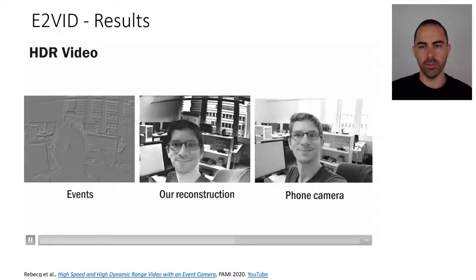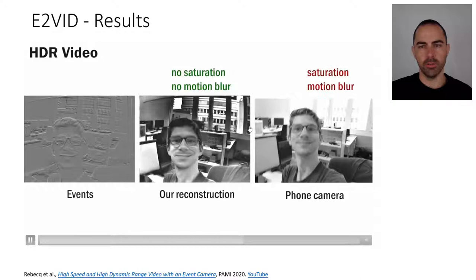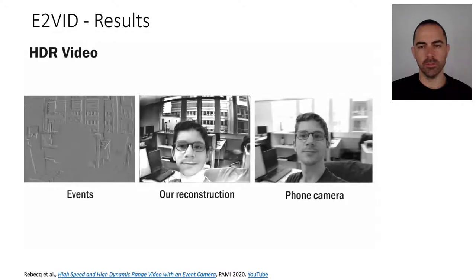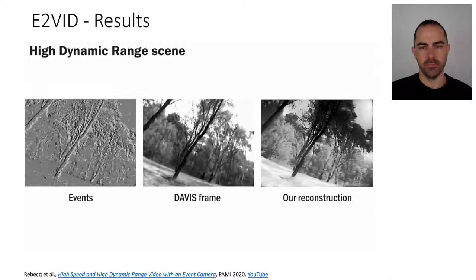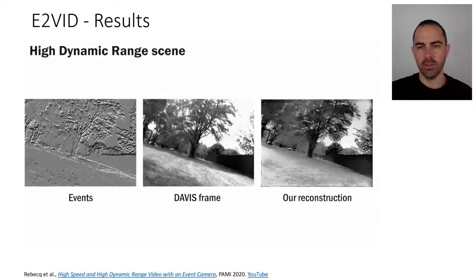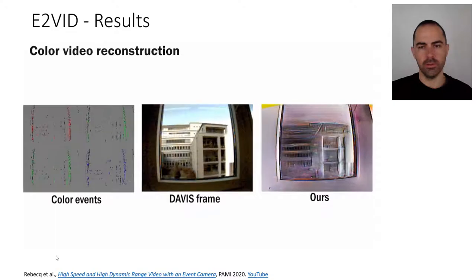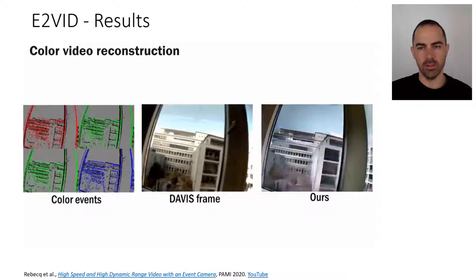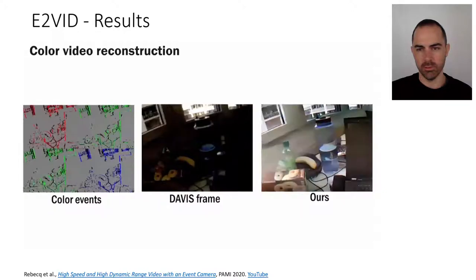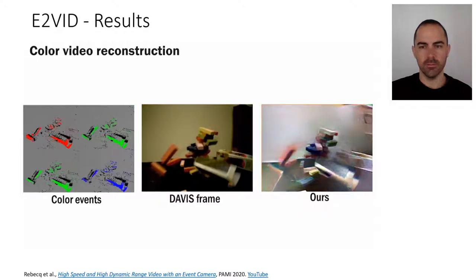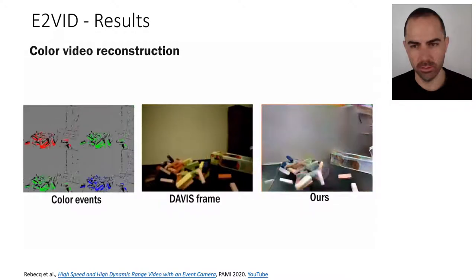The same applies to a window scene where the window is not properly exposed with a standard camera, whereas with the reconstruction you can get a good result for both indoors and outdoors. It can also be used for color reconstruction in a high dynamic range scene — inside is dark and outside is very bright, but reconstruction is still possible by applying the same technique to colored events. It also works on dynamic scenes because, being a network, there is no need to estimate motion.